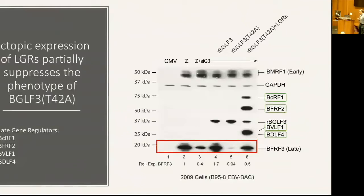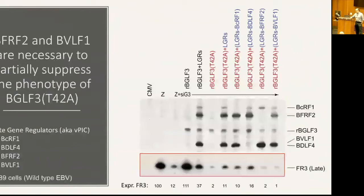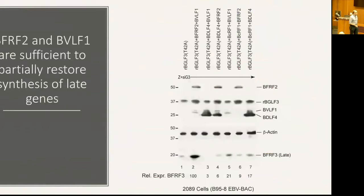We wanted to determine which component specifically rescues the defect. We expressed all late gene regulators and excluded one at a time. We noticed that excluding BDLF4 or BCRF1 had no effect, but excluding BFRF2 and BVLF1 abolished the rescue. Providing different pairwise combinations of late gene regulators confirmed that BFRF2 and BVLF1 are the only two proteins essential for suppressing the T42A phenotype.